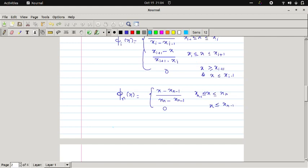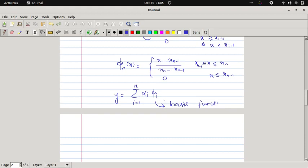Now my aim is I want to write the function in terms of phi. So we define the function y equal to summation i equal to 1 to n, alpha_i times phi_i. This is my solution. These phi_i are the basis functions we define. Here unknown is only alpha_i, so we want to find each.